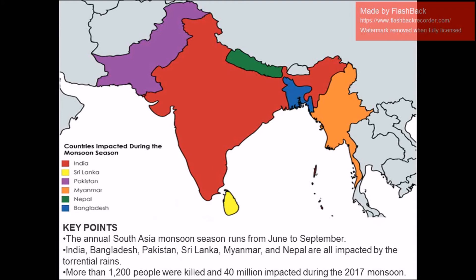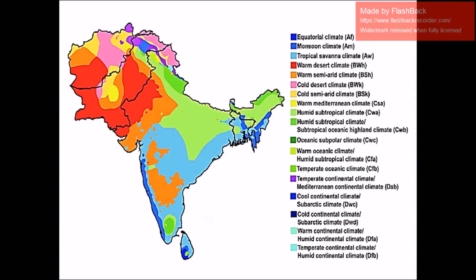The annual South Asia monsoon season runs from June to September. India, Bangladesh, Pakistan, Sri Lanka, Myanmar, and Nepal are all impacted by the torrential rainfall that occurs during the monsoon season. More than 1,200 people were killed and 40 million impacted during the 2017 monsoon. This is also showing the Köppen climate map of South Asia.